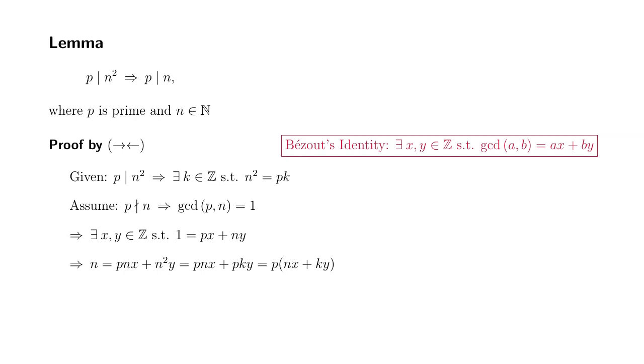So therefore, by definition, we know that p divides n. So there exists some integer l, which is namely nx plus ky integer, such that n can be written as p times some integer l, which by definition means that p divides n, which is a contradiction because the assumption was p does not divide n. Because of the contradiction, our assumption was wrong, so the opposite must be true, which means that p divides n.